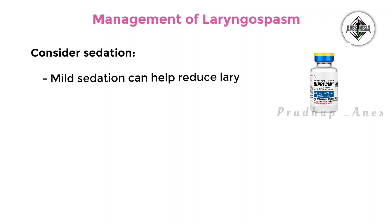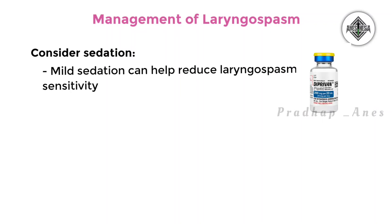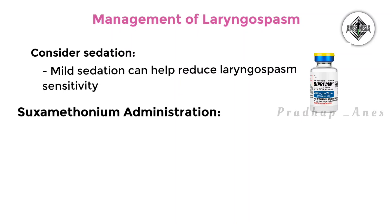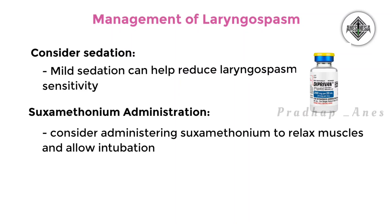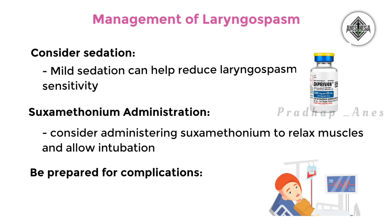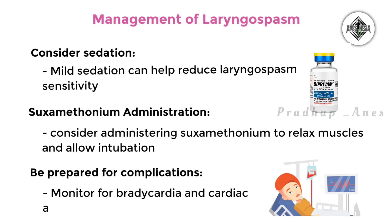Consider sedation and anesthesia: Mild sedation by use of low-dose propofol can help reduce laryngospasm sensitivity. Suxamethonium administration: If hypoxia persists, consider administering suxamethonium to relax muscles and allow intubation. Be prepared for complications — monitor for bradycardia and cardiac arrest due to airway manipulation or medications.